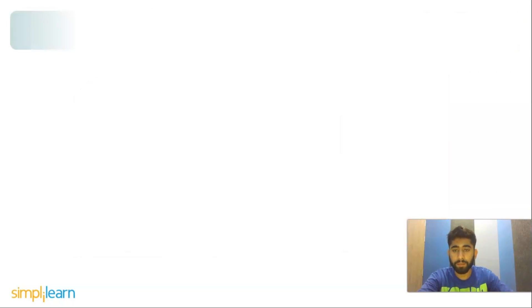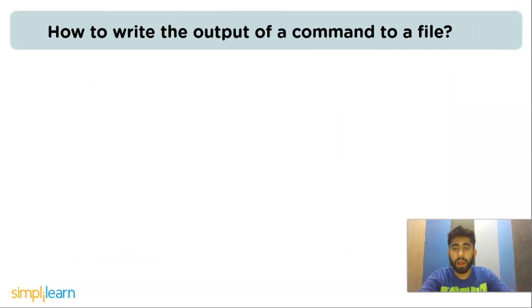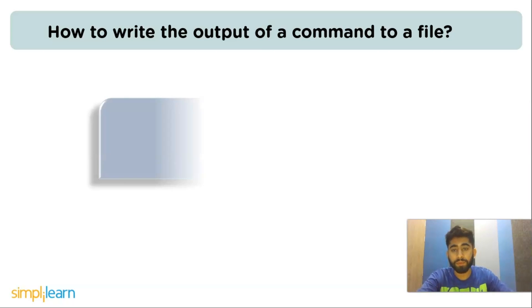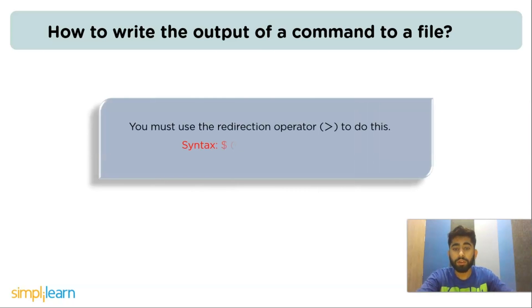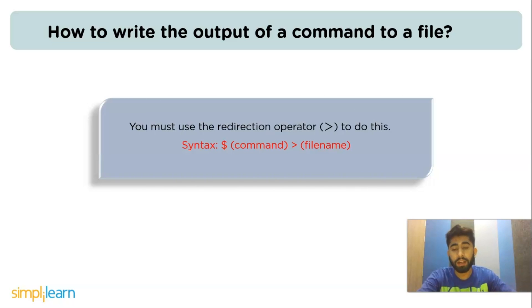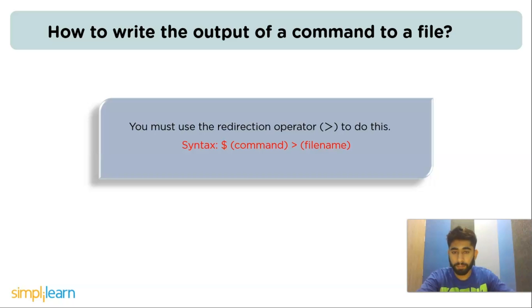The next question is: how do you write the output of a command to a file? You have to use the redirection operator. To do this, write: $ command > filename — where the greater-than sign redirects the command's output into the specified file.